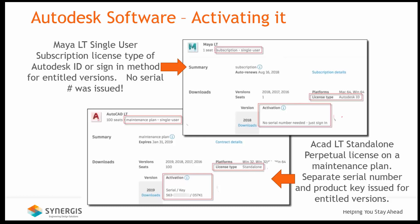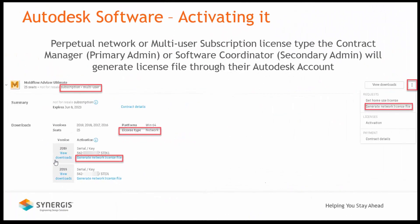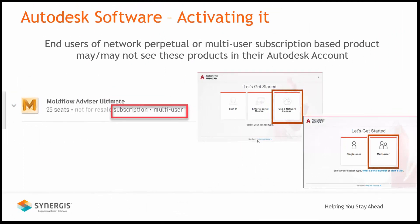Also, because AutoCAD LT is a perpetual license, a unique serial number and product key is issued for each version you're entitled to. When dealing with network-based products, a license file must first be generated by those who manage your organization's subscription and/or contracts. The end user of network license-based products may or may not see these products under their Autodesk account — these products will only appear under those individuals who manage your subscription or contract. For network license activation on the end user machine, the selection of using a network license or the multi-user option in the 'Let's Get Started' dialog is used, followed by entering the license server information.